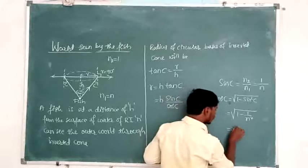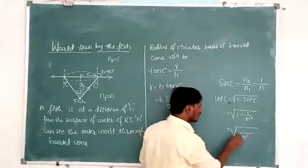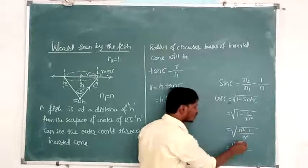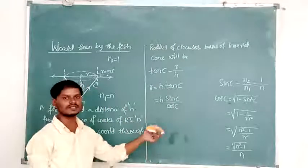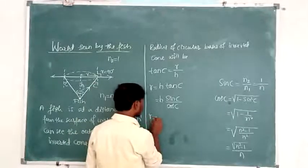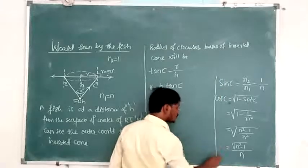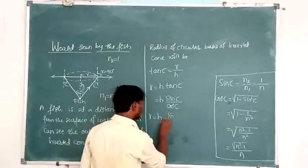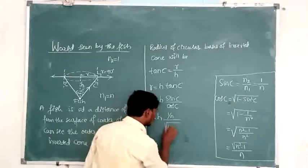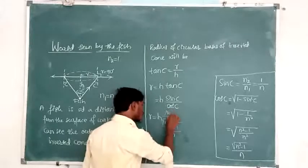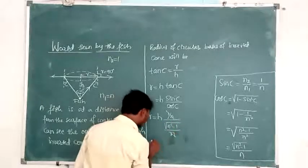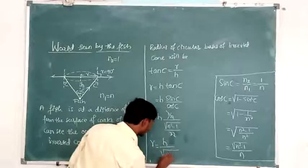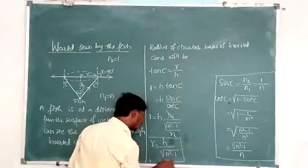Simplifying: 1 − 1/n² = (n² − 1)/n², so cos C = √(n² − 1) / n. Therefore tan C = sin C / cos C = (1/n) / (√(n² − 1)/n) = 1 / √(n² − 1). Substituting back, R = H · tan C = H / √(n² − 1). This is the formula for the radius of the circular base of the inverted cone seen by the fish.